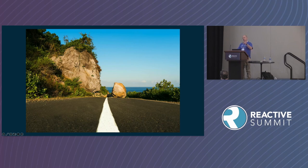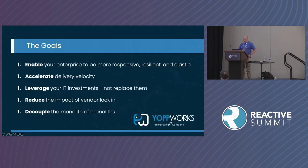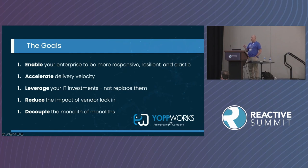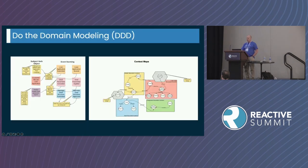So, when we talk about building a reactive architecture with components that are not necessarily reactive, I think we need to look at our systems differently and how we integrate them. The goals: we want to enable our enterprise to be more responsive, resilient, and elastic. We want to accelerate delivery of velocity. We want to leverage our IT investments and not replace them. This is where I think a lot of reactive projects go a little bit askew, because the natural inclination is to want to replace these systems and build them ourselves, rather than leveraging the investments the company has already made. We want to reduce the impact of vendor lock-in. We want to decouple the monolith of monoliths.